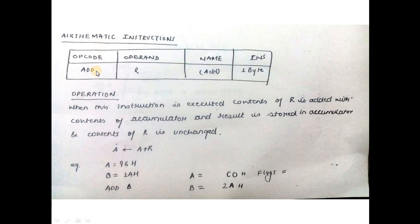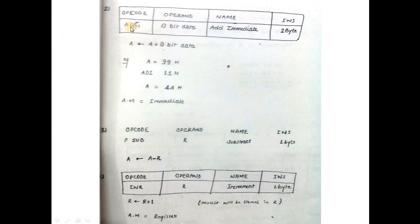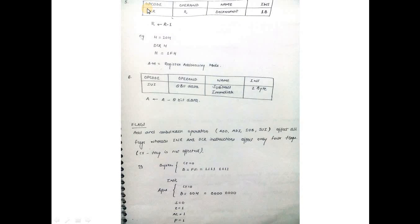Arithmetic instructions: first is ADD, which adds the operand R to the accumulator. Only register transfer, so one-byte instruction. ADD immediate means immediate data, so two-byte instruction. Similarly, SUB is one-byte instruction, and SBI (subtract immediate) is two-byte.